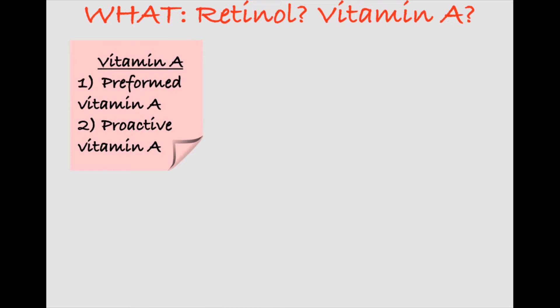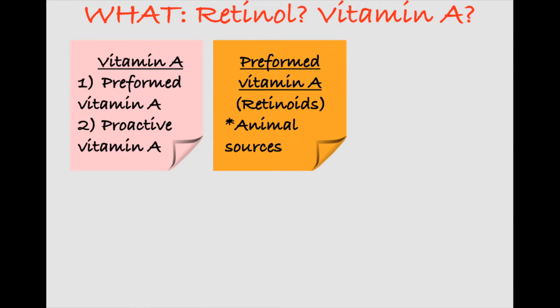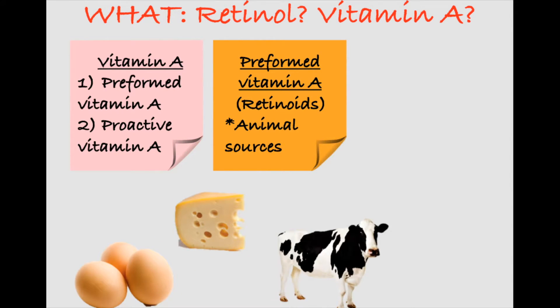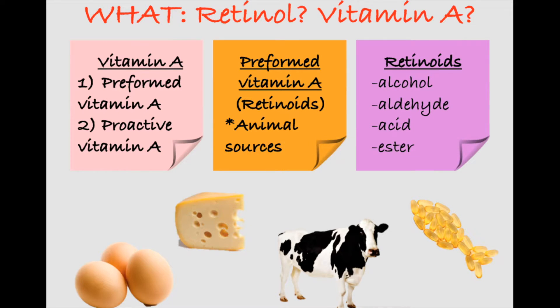The retinoid derivatives of vitamin A are also called preformed vitamin A, and they're found in animal sources. These include dairy products, meat, and fish oils. Retinoids can be found as alcohols, aldehydes, and esters.